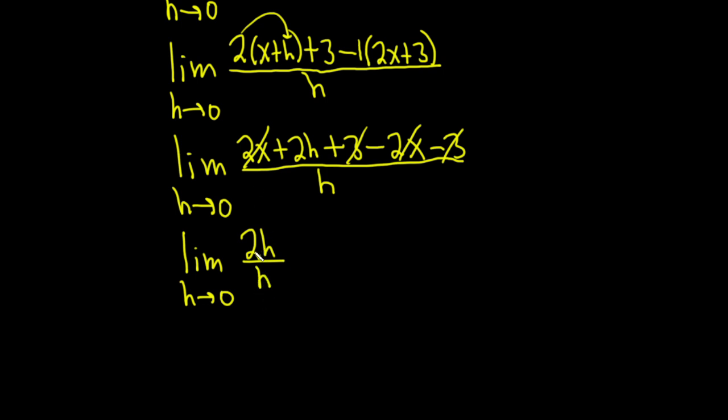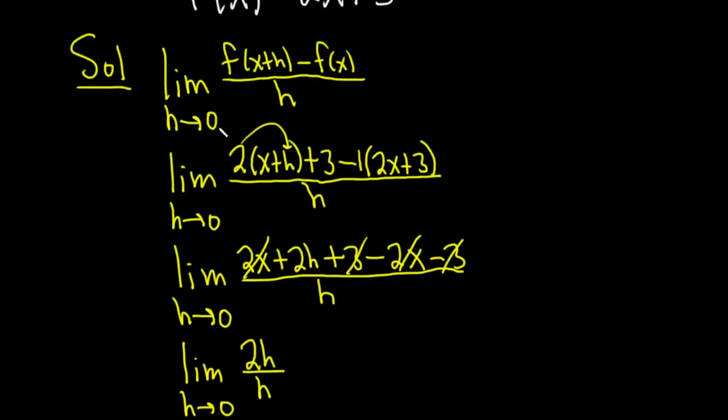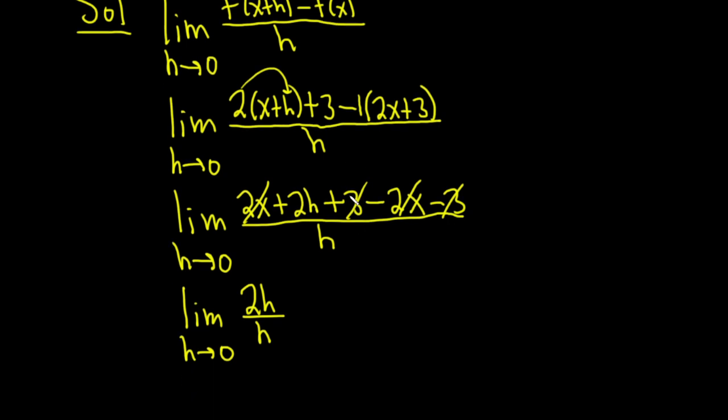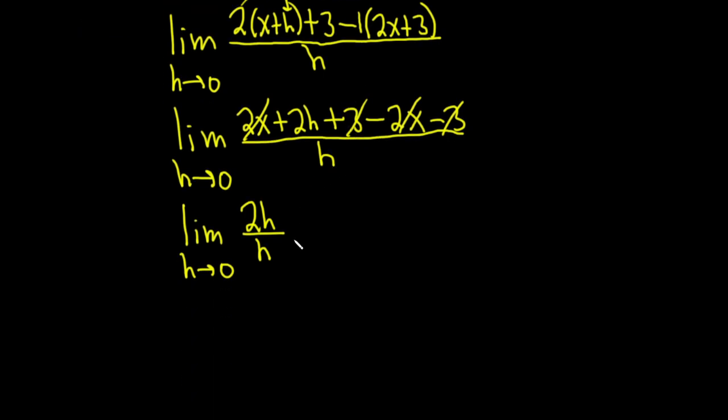Because you see, at the beginning, we would have plugged in 0 for h, but you can't do that, right? You can't have 0 on the bottom. So the goal is you kind of clean it up and hopefully get to a place where you can take the limit. So this goes away. So we get the limit as h approaches 0 of 2.